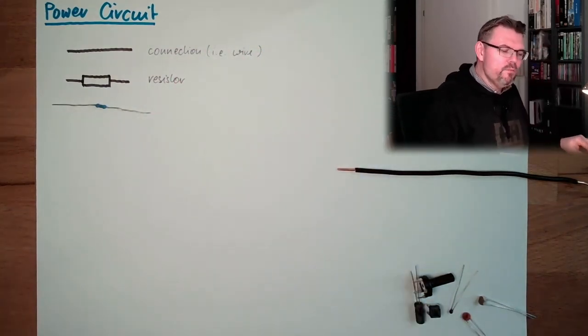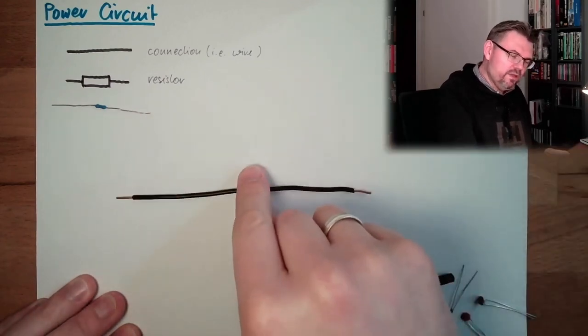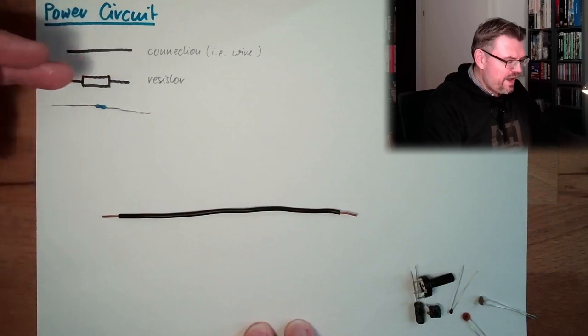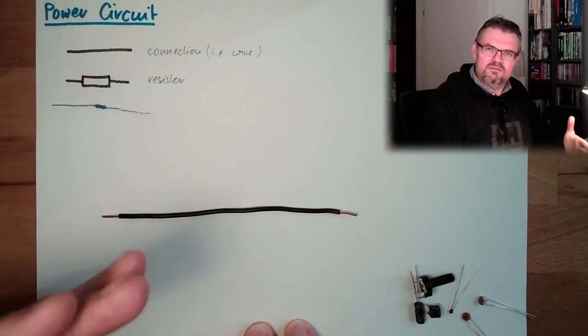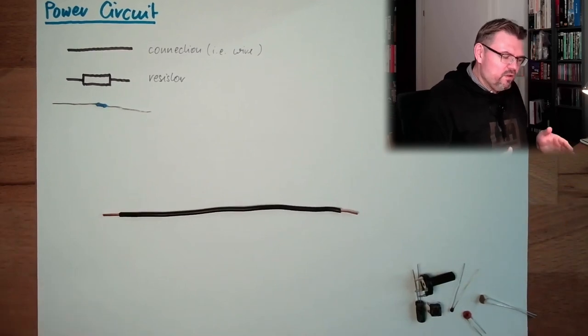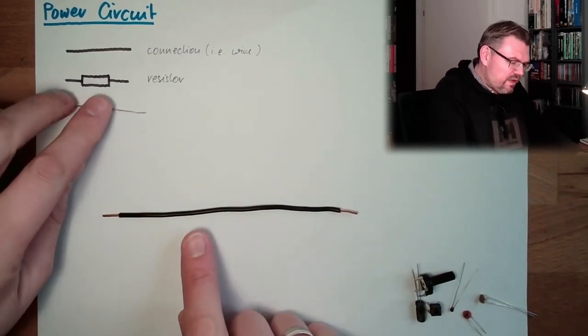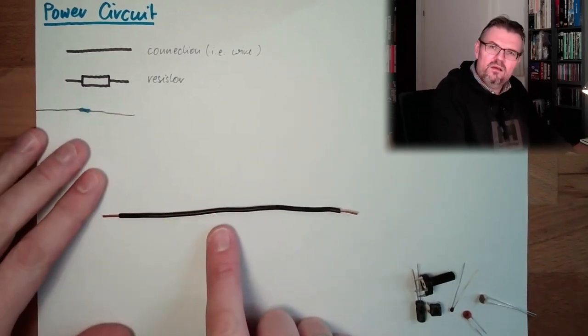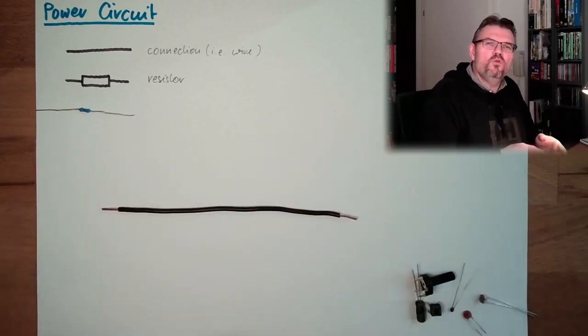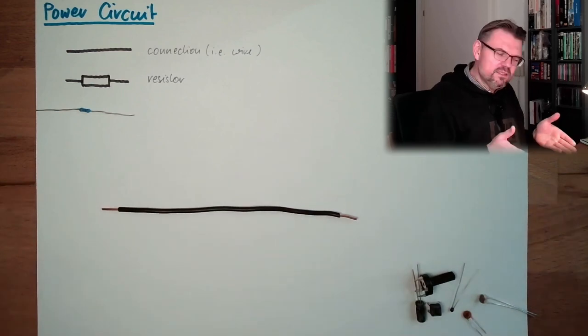And if we want to have a model of a real conductive material, of a real wire like that, we would use a wire and a resistor in series. So one after the other. There is no resistor really there, but we think of the resistance of this wire as if there would be a resistance and the rest of the wire is just ideal.